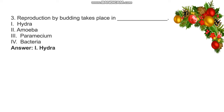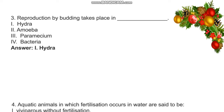Reproduction by budding takes place in which organism? The options are: Hydra, Amoeba, Paramecium, Bacteria. The answer is Hydra.